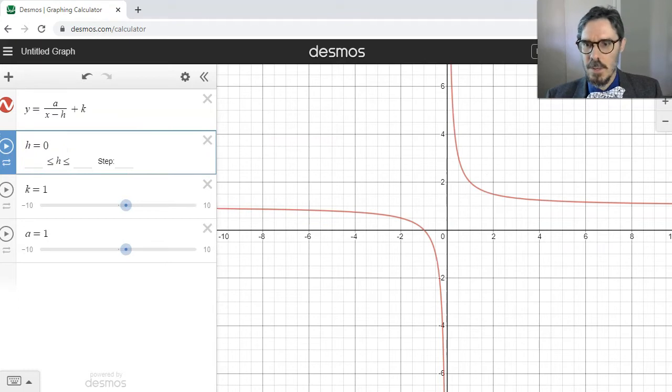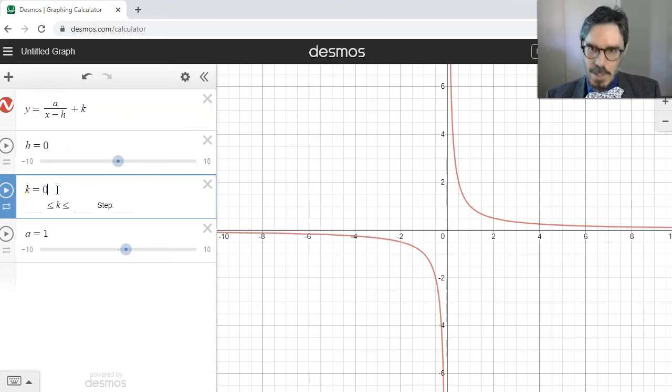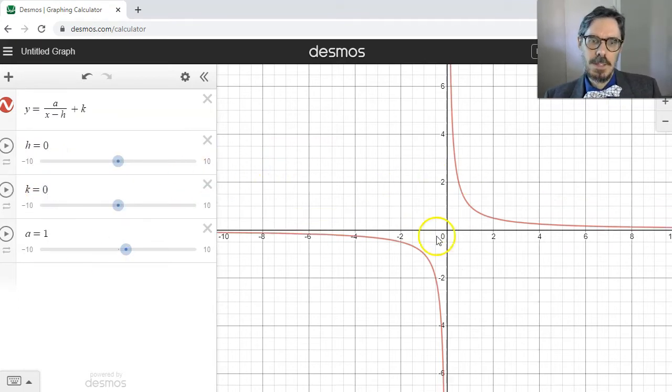So if I make both of those zero, we can go back to our original. So this is the normal situation. Notice here I've gone plus k. This is the conventional way of writing it, but it is exactly the same as saying y minus k equals a of x minus h.